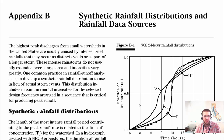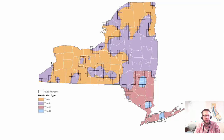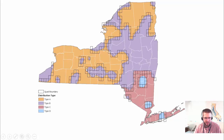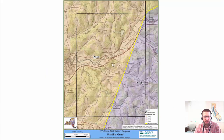If you're looking for your synthetic distribution type in New York, go to the map on the NRCS Engineering website for New York. It lists all the counties and shows whether you're Type A, B, C, or D. If you're in a county on the border between two types, there are blow-up maps showing which towns fall in which type.